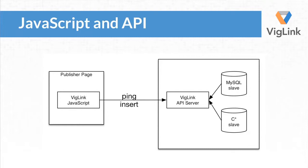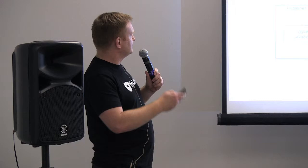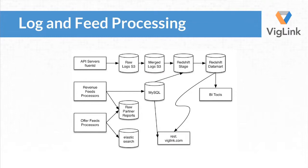At a really high level, there's some JavaScript running on a publisher's page that we make available. It'll send a ping and an insert call — in reality we actually batch those together typically. The ping is just 'hey, I'm here,' and the insert is 'please give me all of the links to insert.' Katrina's going to talk about those actual data structures in a minute. Behind that, we've got MySQL and Cassandra, and in a couple of slides we'll go into much more detail.